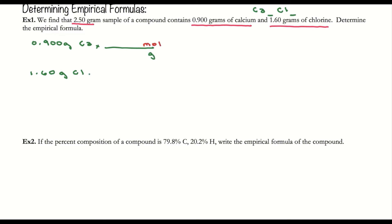Same thing for chlorine: grams on bottom, moles on top. I need to write the molar mass of calcium and chlorine. The molar mass of calcium is 40.078 grams per mole. For chlorine, it's 35.453 grams per mole.